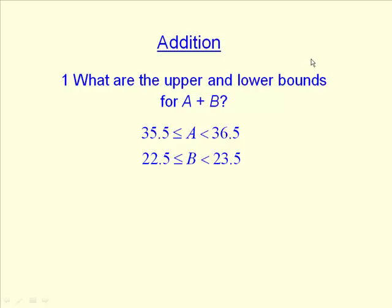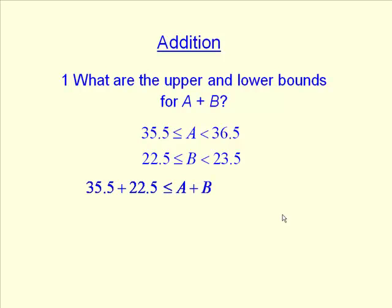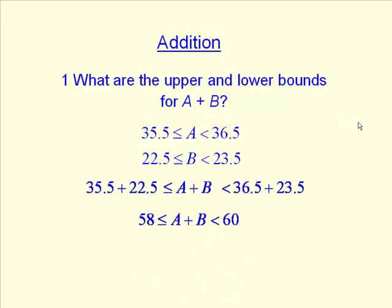Now we're going to look at some calculations with these values. We want the upper and lower bounds for the two values added. The lower bound is going to be the two lowest possible values — shortest possible A plus shortest possible B. And the upper bound is if you have the longest possible of each rope added together: 36.5 plus 23.5. Those are the lower and upper bounds for A plus B.